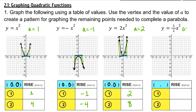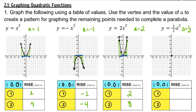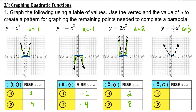For the fourth example, a is 1/2. Our vertex is still (0, 0). Plugging in -2, -1, 1, and 2 gives the remaining four points. One unit away from the vertex, the y value rises only half a unit. Two units away from the vertex, the y rises two units.